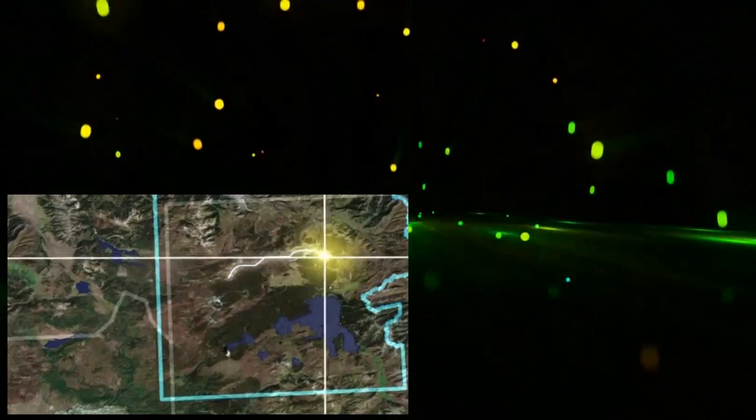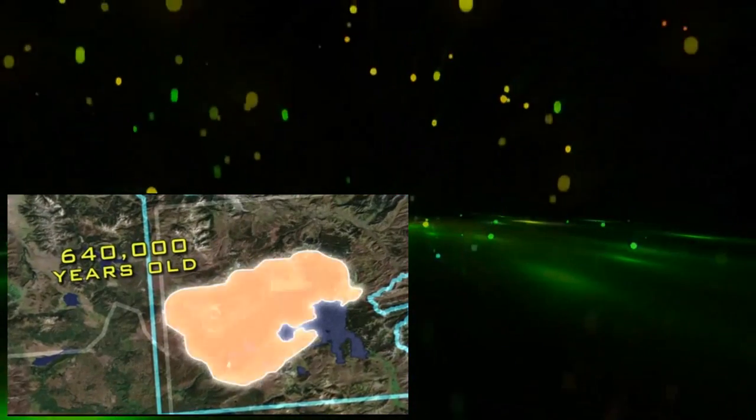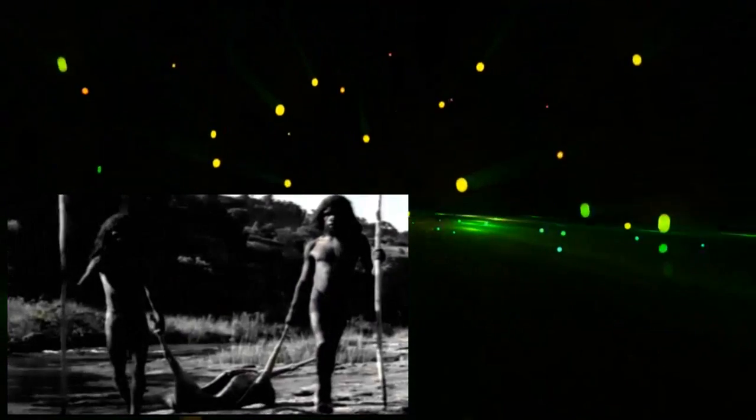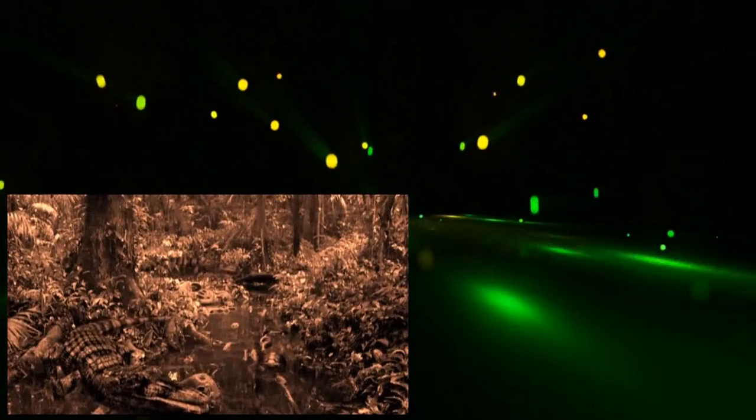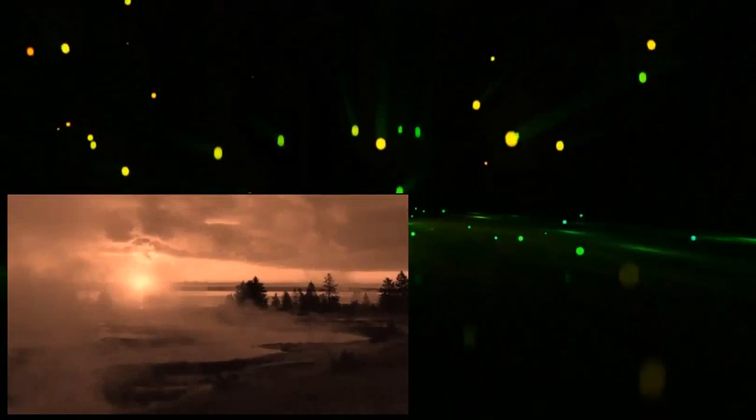The most recent one, known as the Lava Creek eruption, occurred 640,000 years ago. At the time, early man had yet to arrive on the scene. Exotic prehistoric animals roamed North America. Five miles beneath the Earth, a magma cauldron three times the size of New York City was coming to a boil.